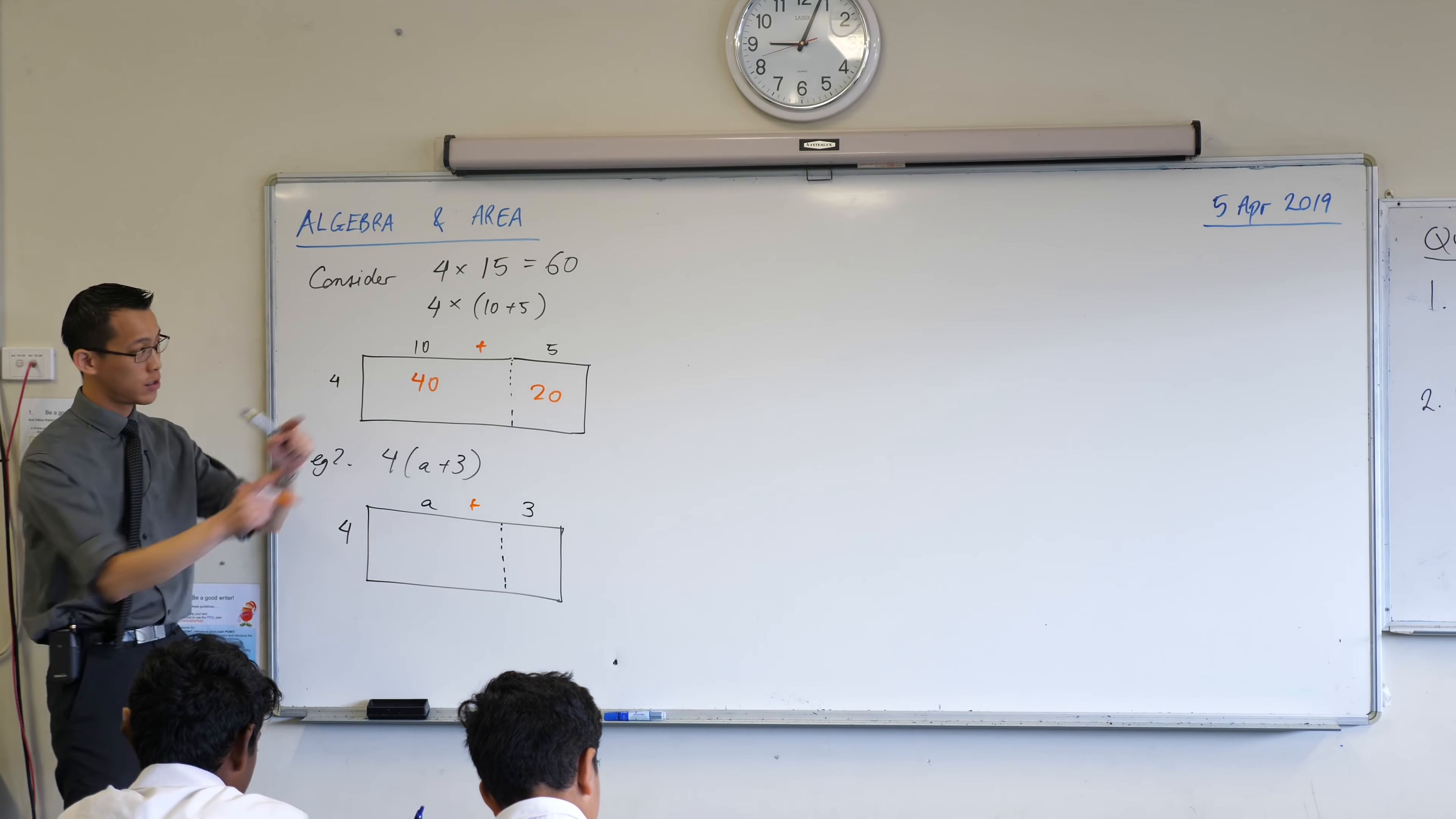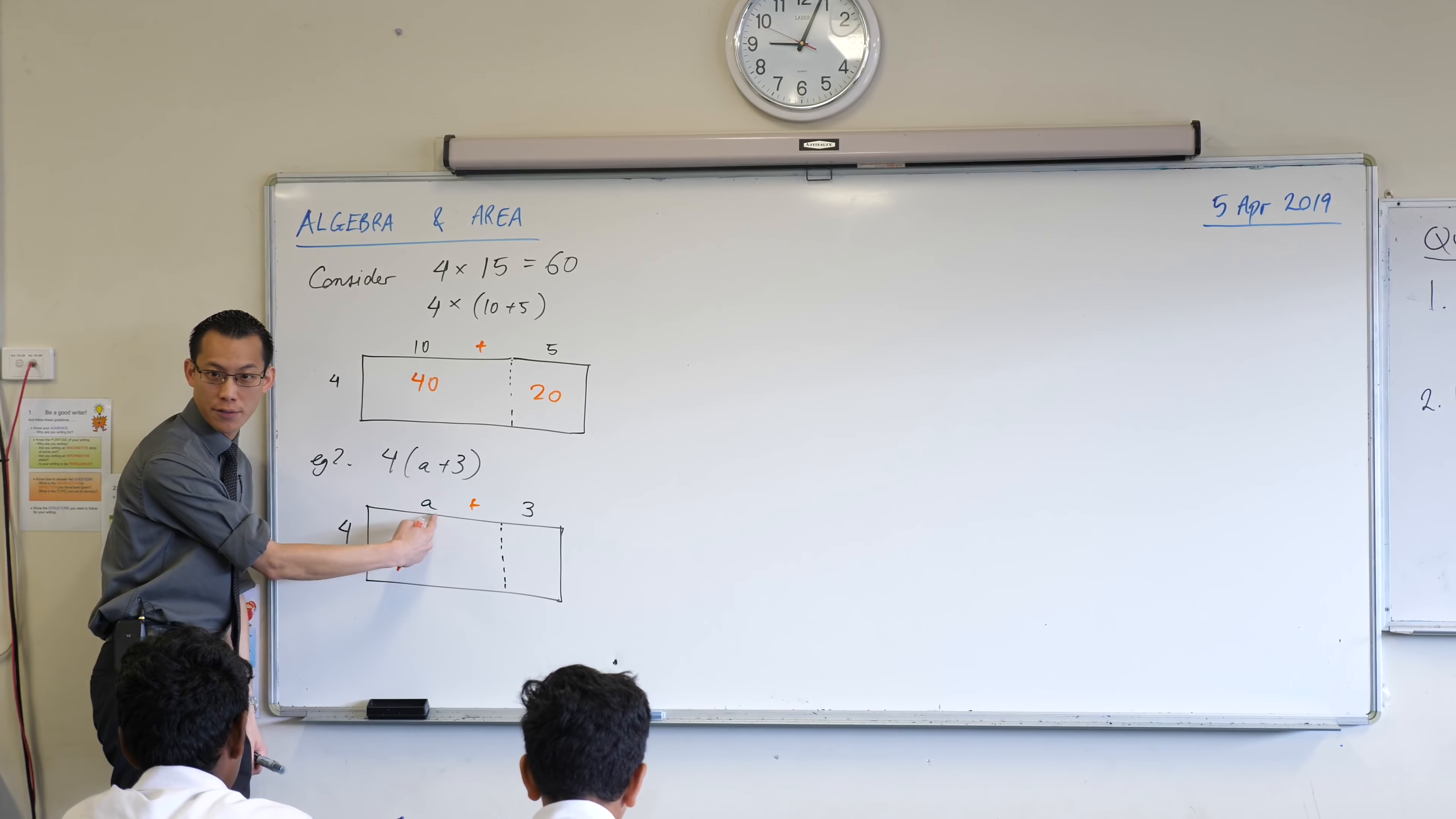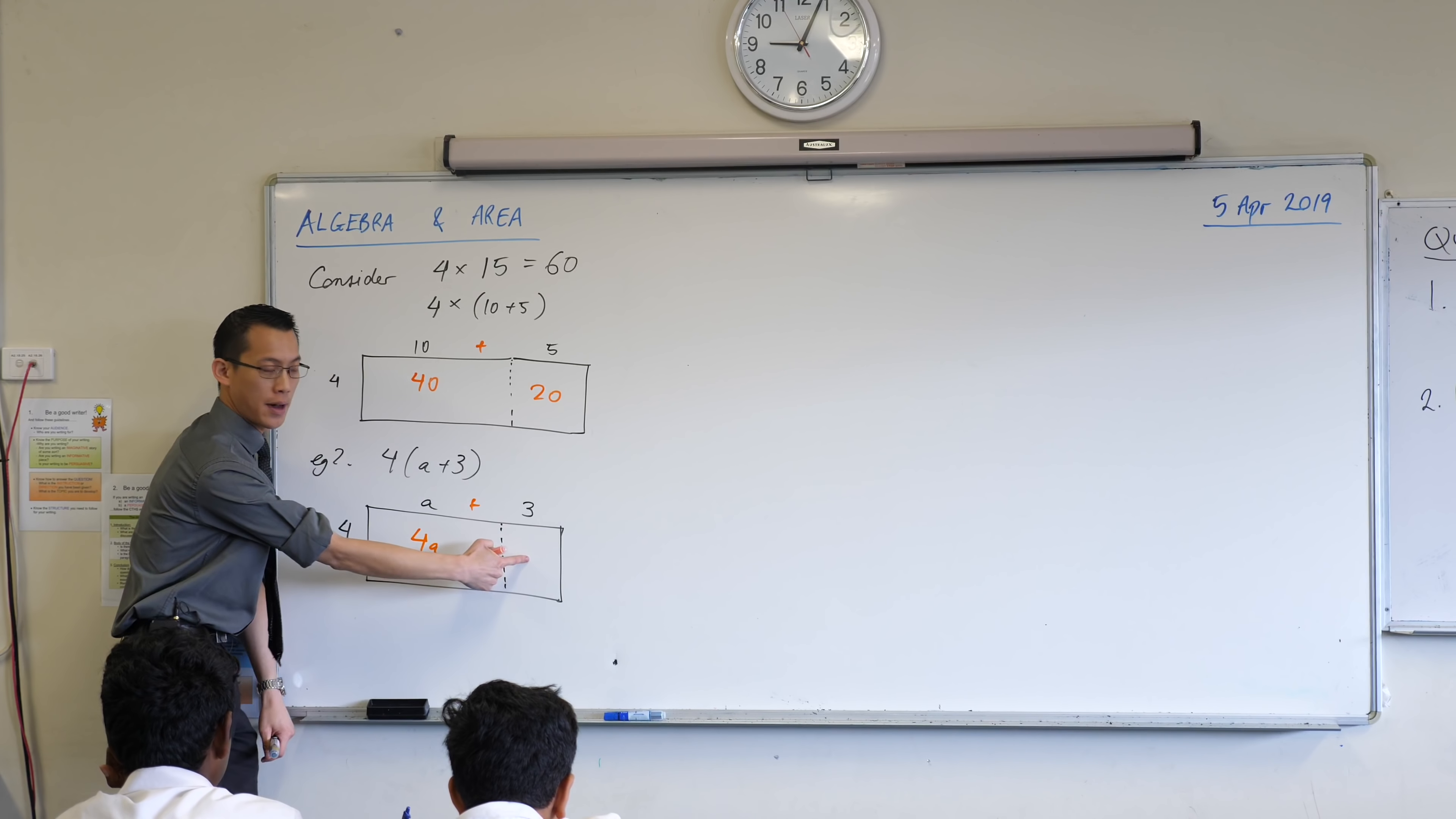Now for anyone who looked at those ones before, and the expansion is still a bit funny and confusing, right? Can you see how this gives us the two terms? It's why I'm distributing the 4 to the A and the 3. What's the area of this part here? It's 4a. Very good.